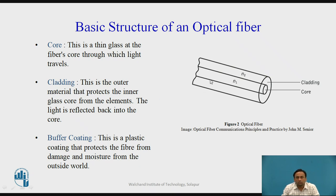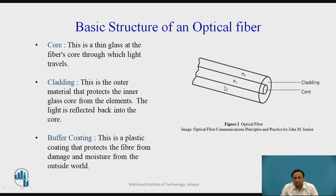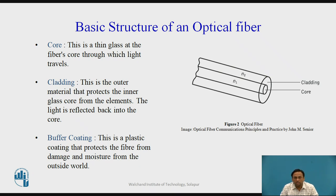Now we will see the basic structure of an optical fiber. As shown in this figure, it consists of a core and cladding. Above this there is a buffer coating and a mechanical coating of black color to avoid damages. The core is the thin glass through which the light travels. It must follow total internal reflection, which we will cover in coming lectures.